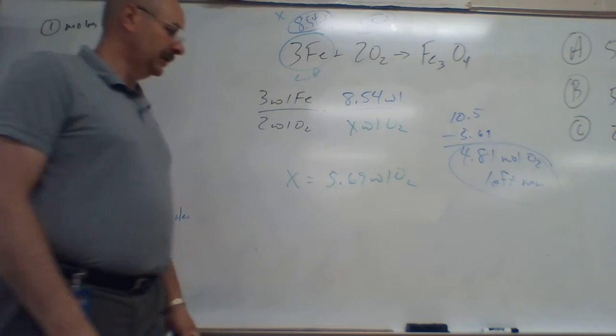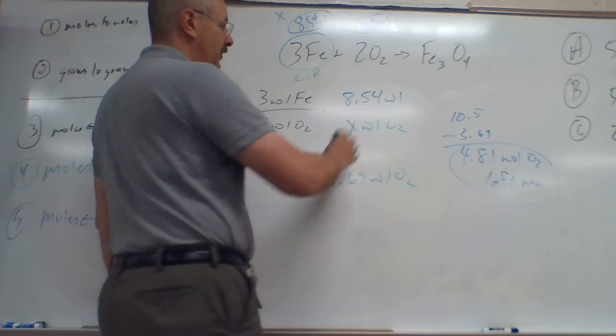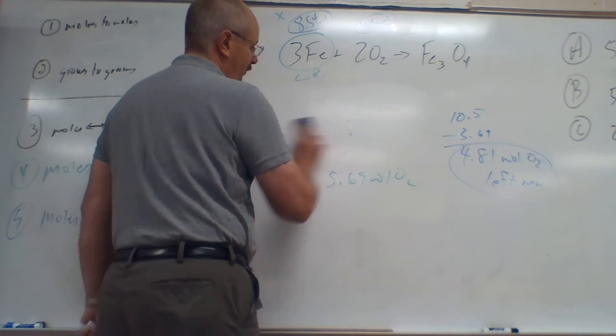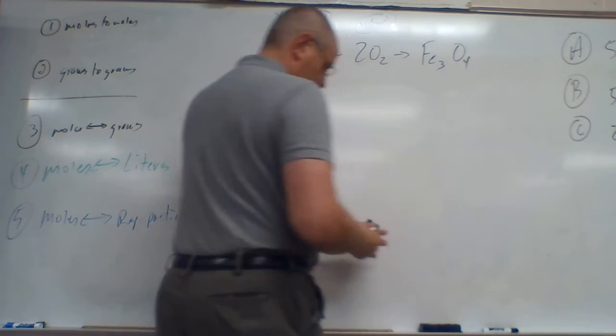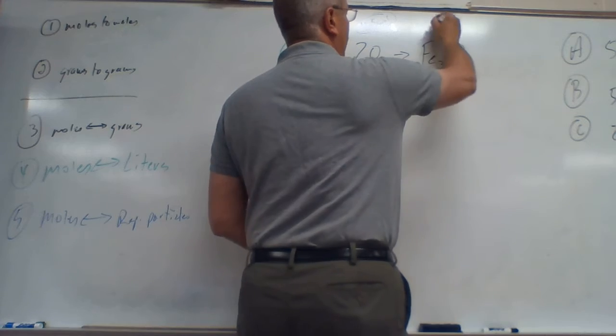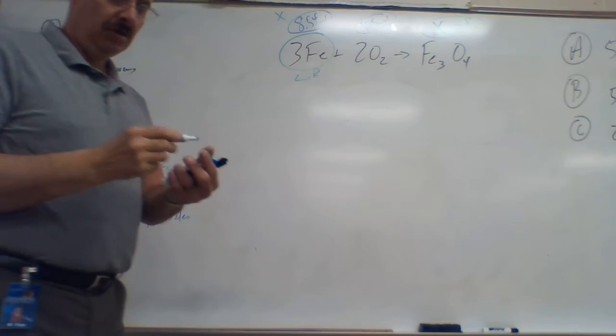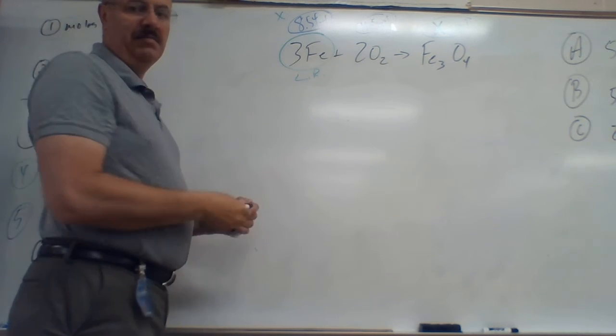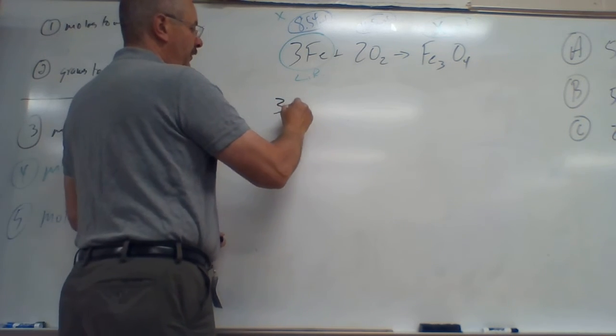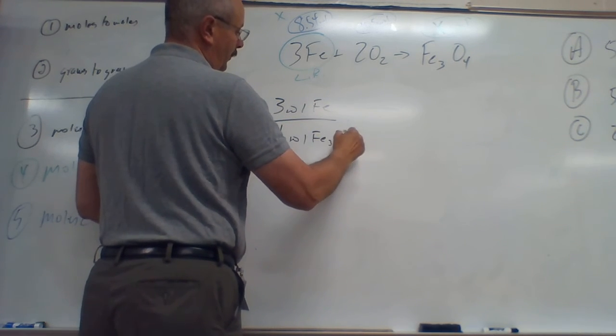So then the last part of this question says how much of the product can be formed. So we're trying to find out x moles of this guy, our product. Which one decides how much product can be formed? My limiting reagent, this guy. So we got to go 3 moles of Fe will give me 1 mole of Fe₃O₄.